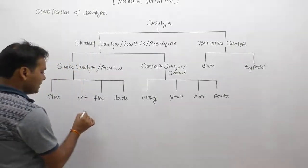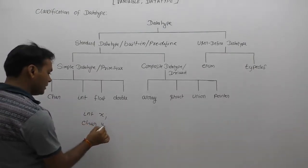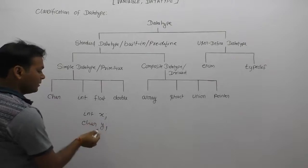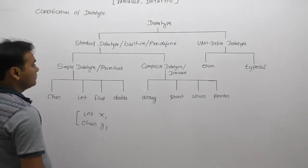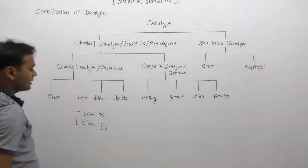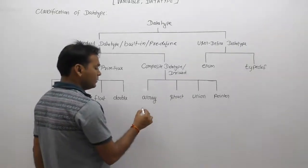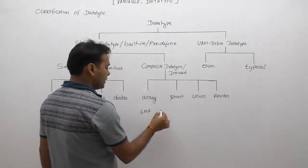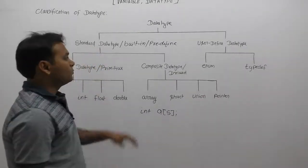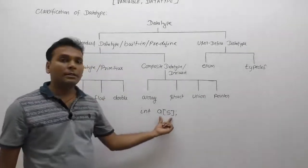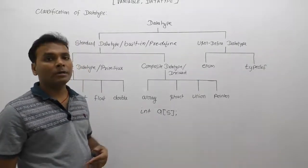For a simple data type, you can directly write something like 'integer x' or 'character y'. The data type of x is integer and the data type of y is character, which is considered a simple data type, also known as a standard data type. In the case of an array, it is also created based on an existing data type, like 'a[5]', but it is considered composite because it is a collection of elements.